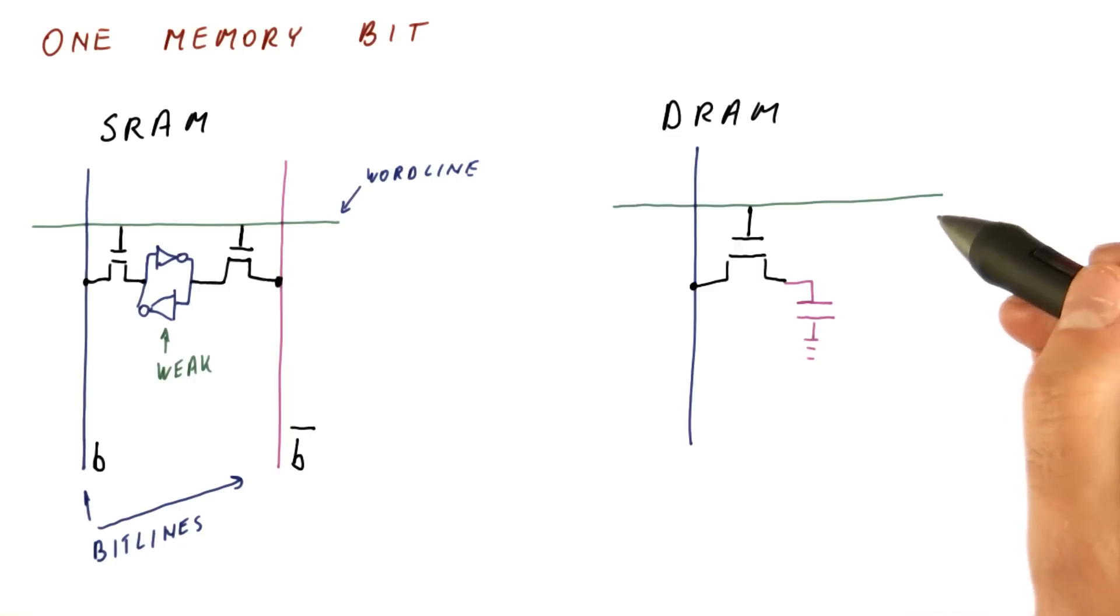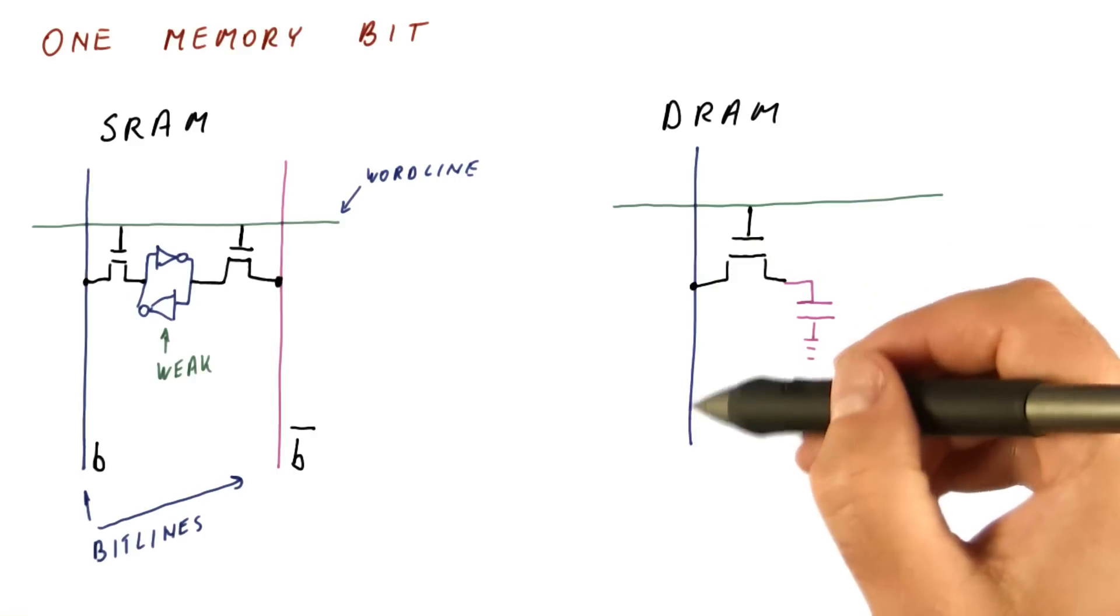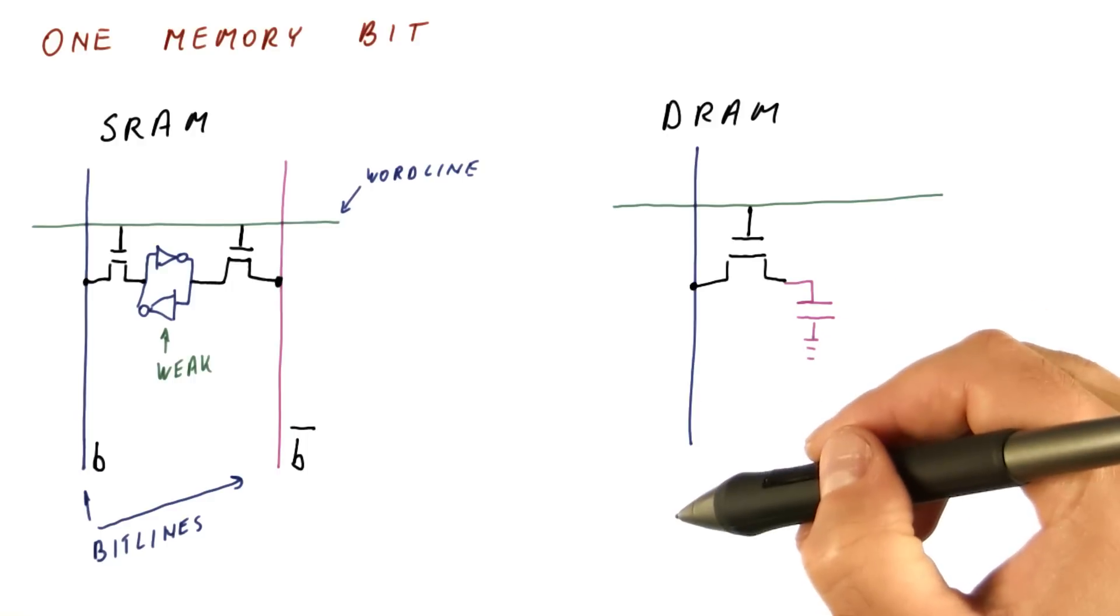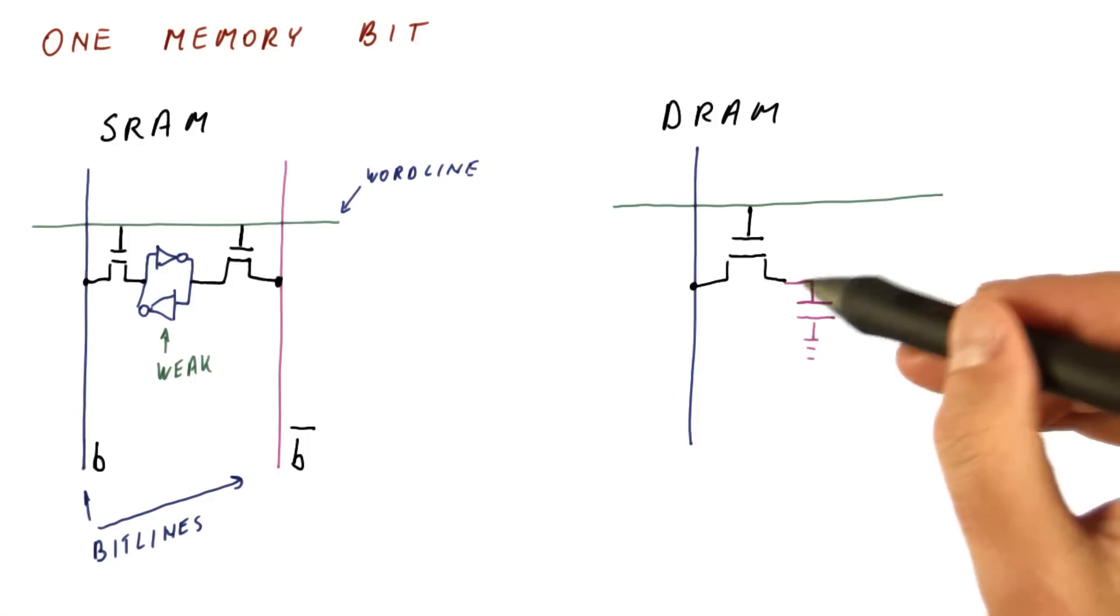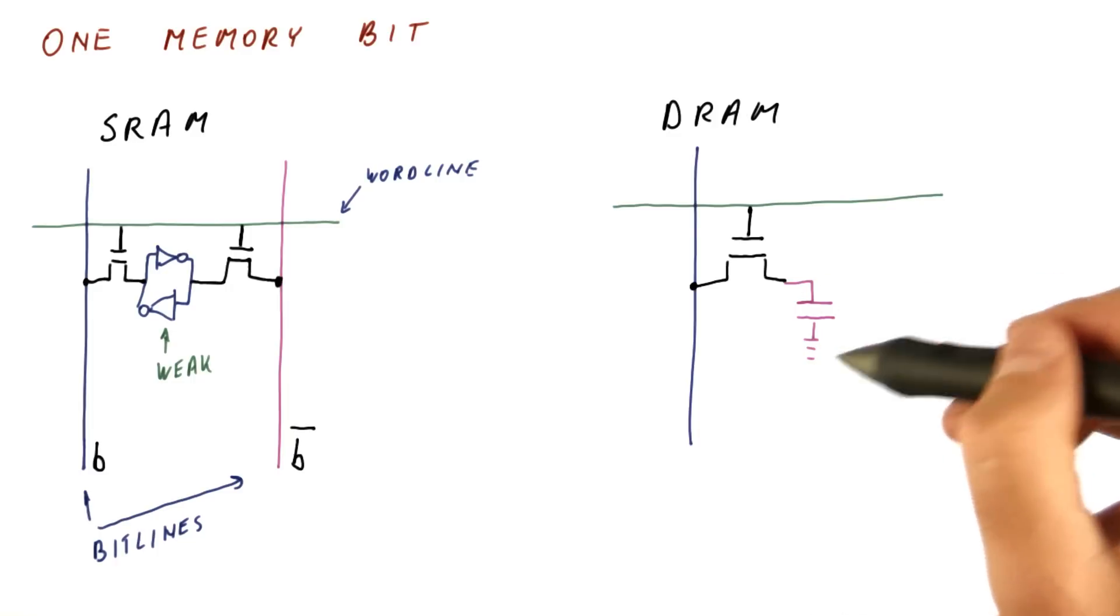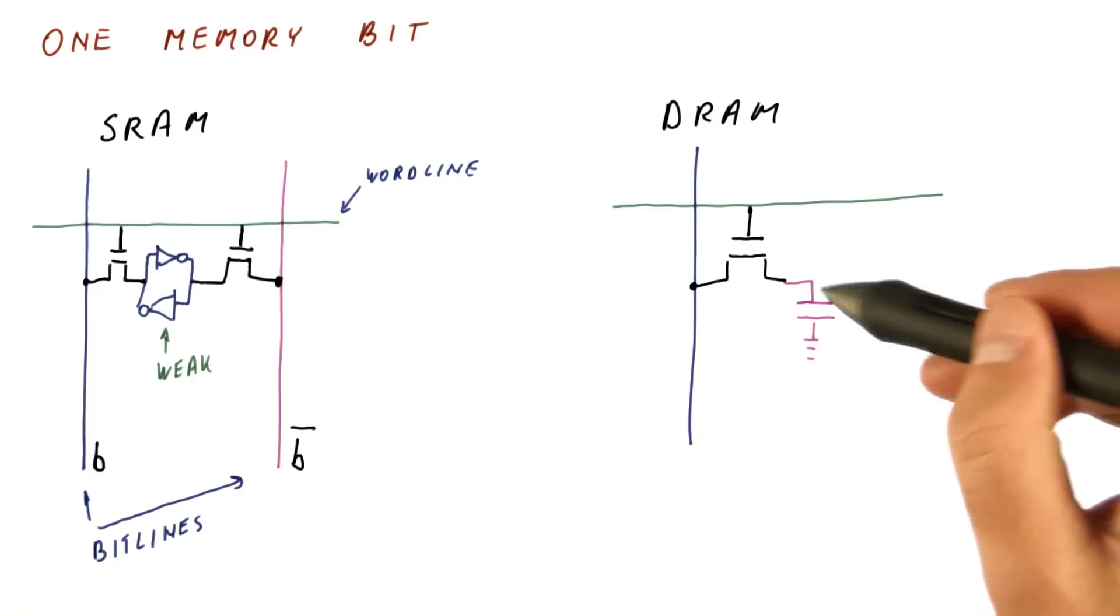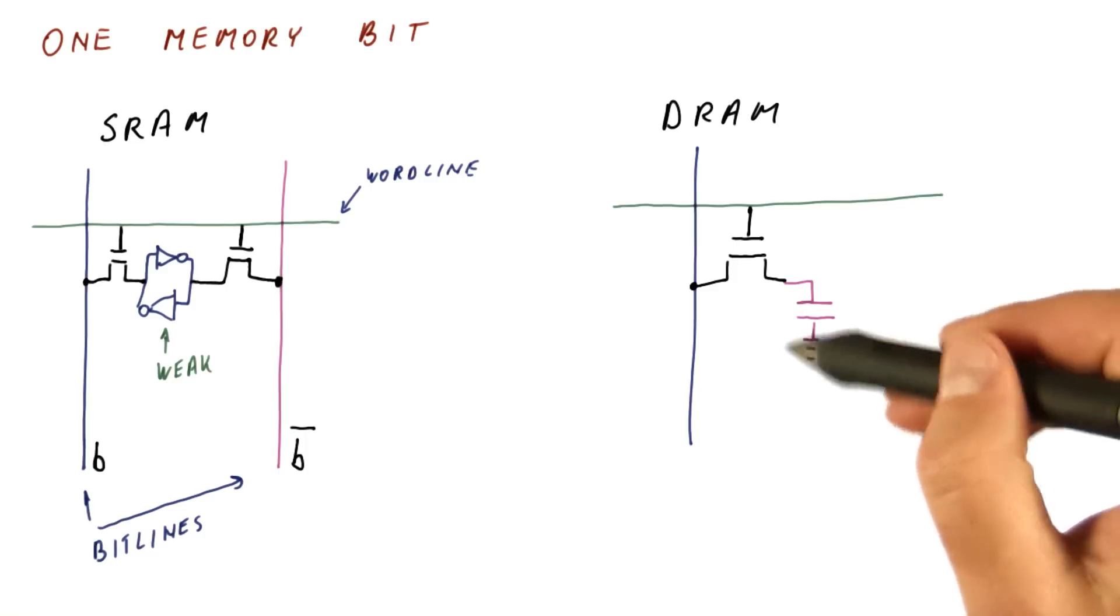If we want to write a 0, we activate the word line. The capacitor is now connected to the bit line that is connected to a 0 voltage, and we empty this capacitor into the bit line. Thus, now our capacitor becomes a 0 value. Now when we disconnect the word line, the capacitor has nothing in it, so it retains the value of 0.